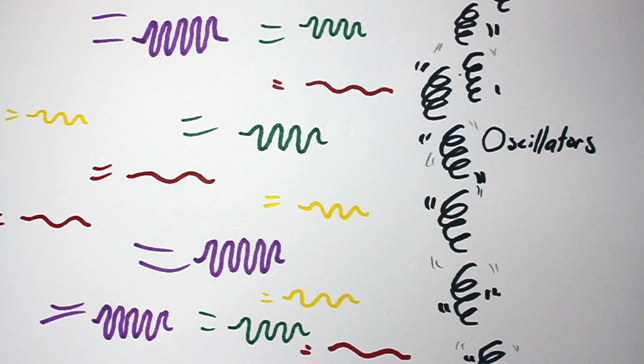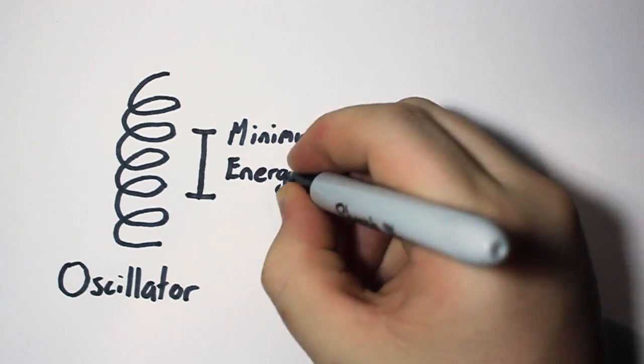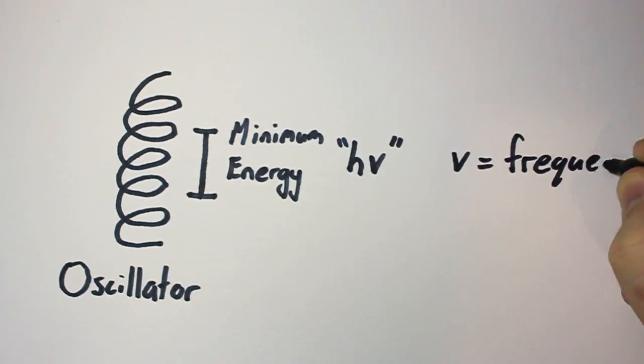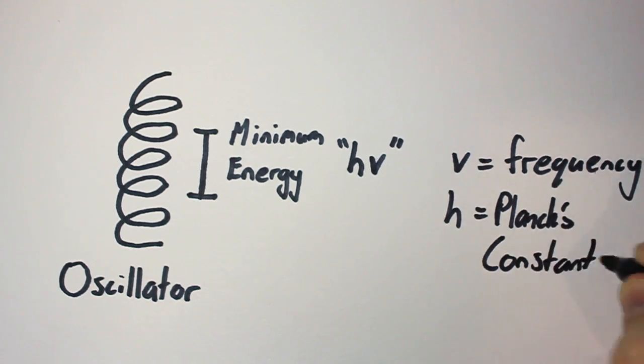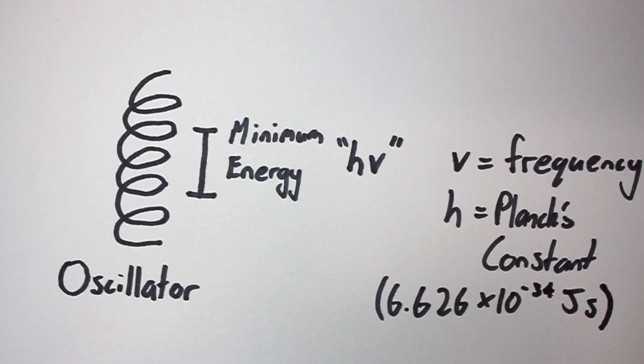In other other words, there must be a minimum energy that can be emitted by the oscillator, equaling frequency times Planck's constant, h equals 6.626 times 10 to the negative 34 joule seconds.